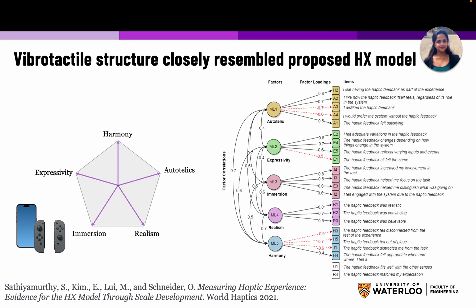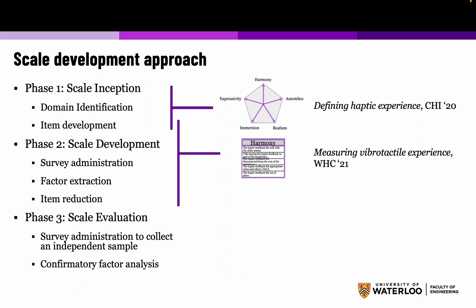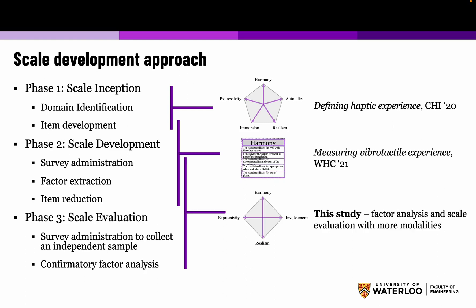After deploying the questionnaire, we did find a five-factor model that closely resembled the initially proposed haptic experience model, supplying support for these five experiential dimensions. However, it was deployed remotely and only with vibrotactile feedback, so there are some limitations. We've got an initial model and were able to refine these items to a potential draft questionnaire. This follow-up study looks at factor analysis and scale evaluation with more modalities, since the first study was grounded in vibrotactile feedback and the second study also only worked with vibrotactile experiences since it had to be done remotely.